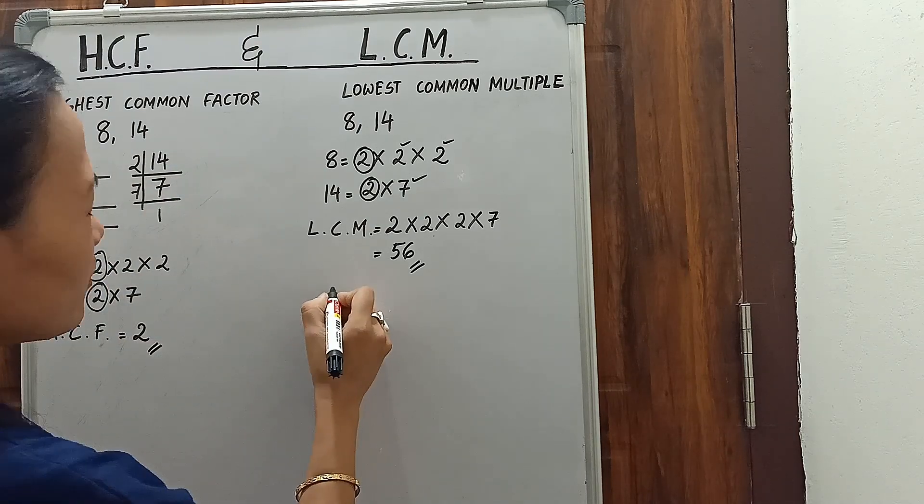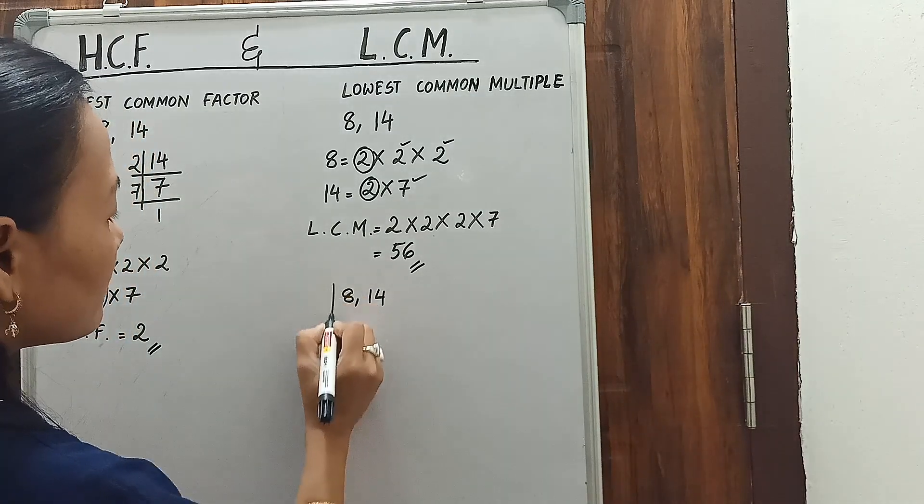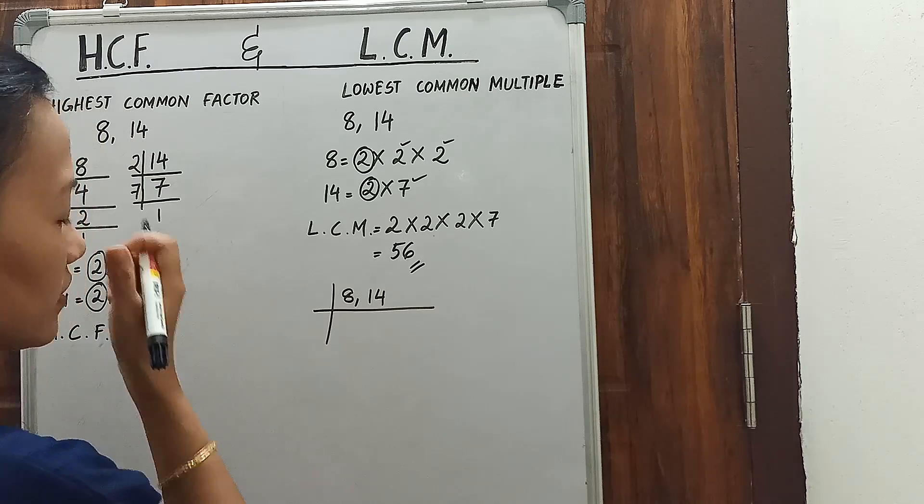Again, we have one method here for LCM. You write the two numbers and start dividing by the lowest common number.